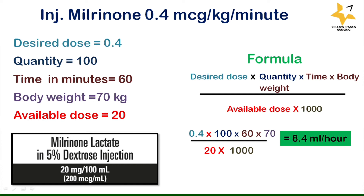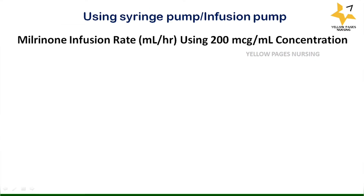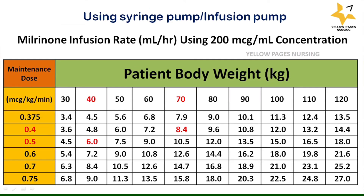Here comes the drip chart of milrinone infusion using a syringe pump or infusion pump, using 200 microgram per ml concentration. We have maintenance dose calculated according to patient's body weight. We have already discussed a few of these calculations, which are highlighted for your reference.